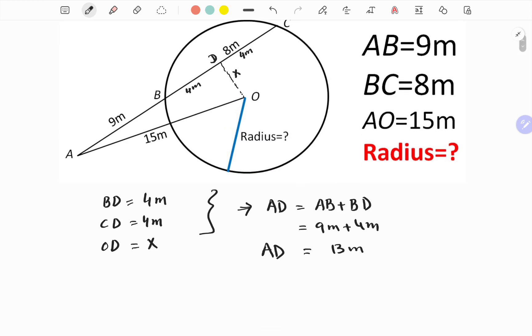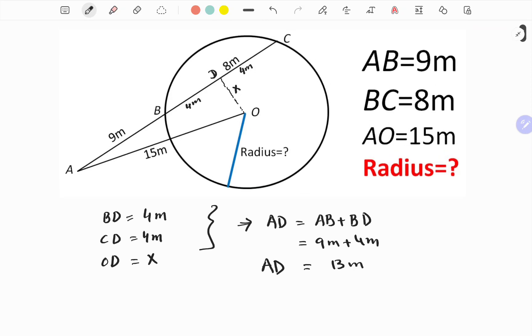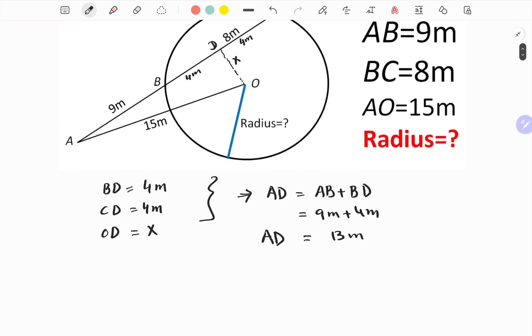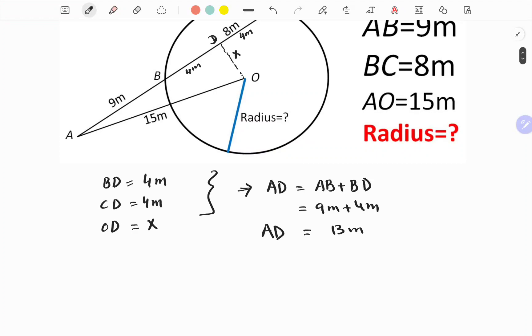Now we have to find x from Pythagorean theorem. This is the hypotenuse. OAD is a right triangle where D is at right angle, so OA is hypotenuse. By Pythagoras, OA squared is equal to OD squared plus AD squared.